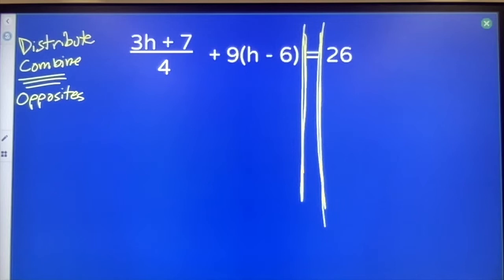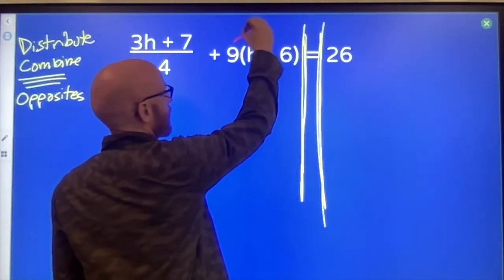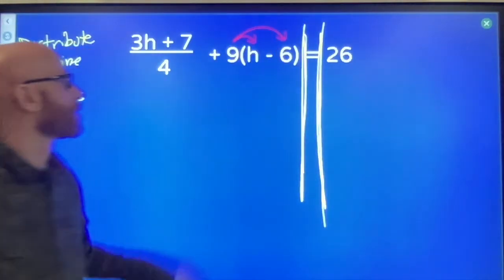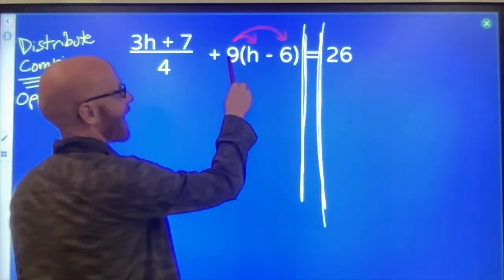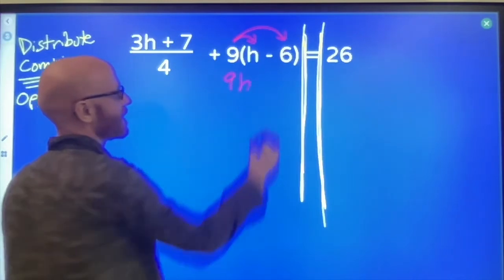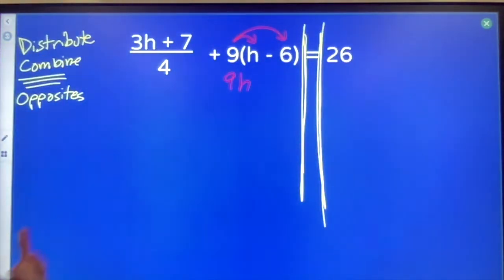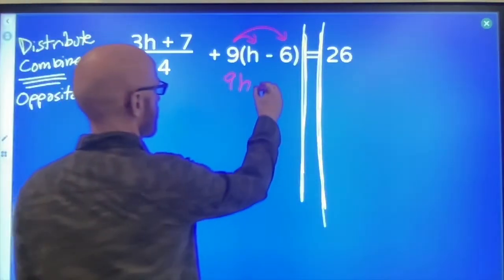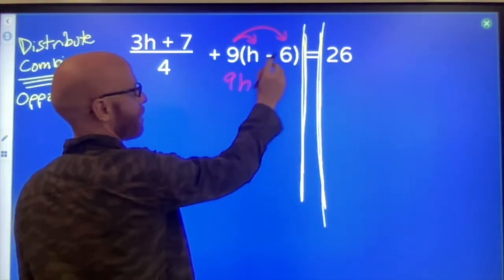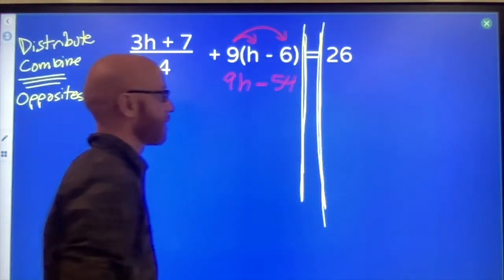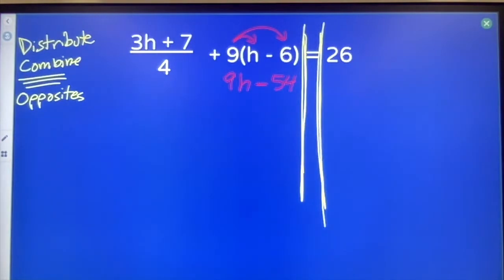This is how this looks. Distribute to get rid of parentheses. You ought to be familiar with the idea of multiplying a leading term through parentheses. I've got nine packages. Each package has one h in it, so all together I have nine h's, and each package has a minus six in it. If I have nine of those, then we've got minus 54 all together.